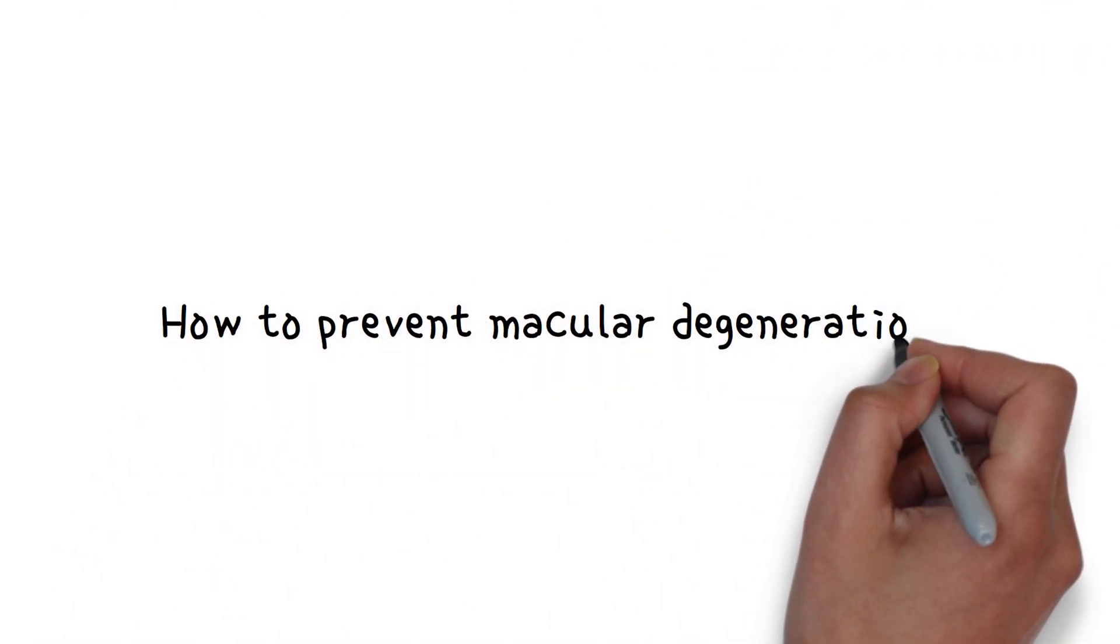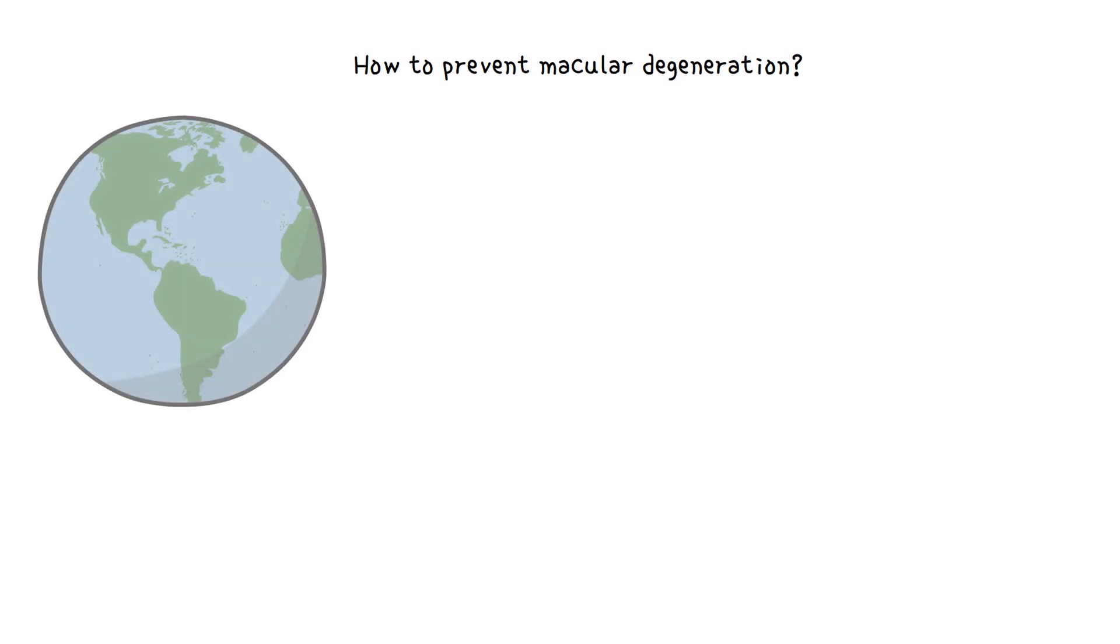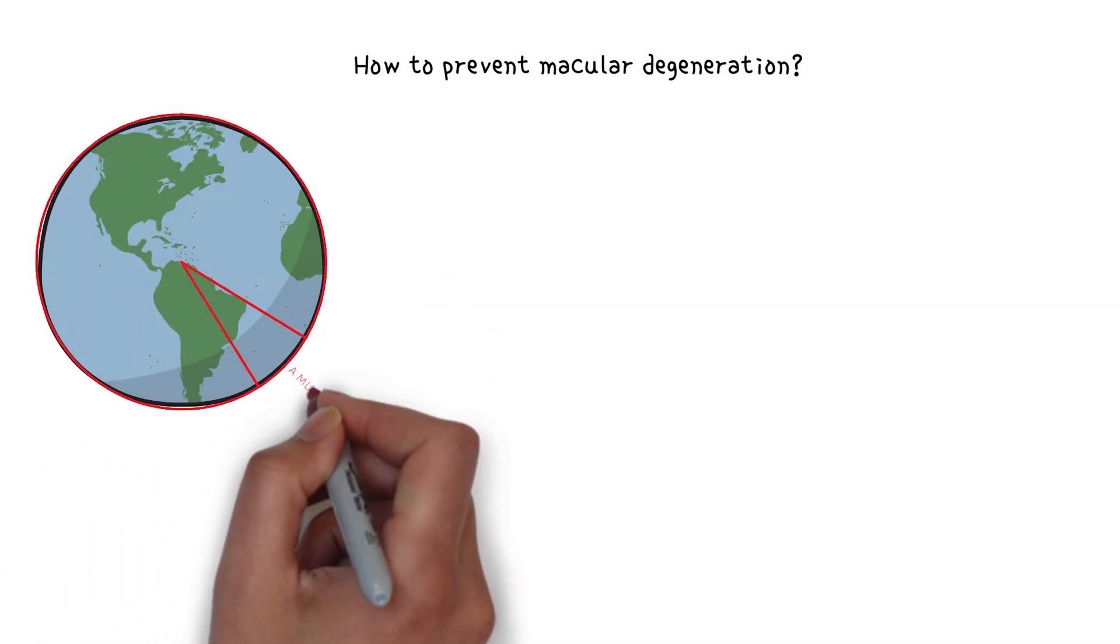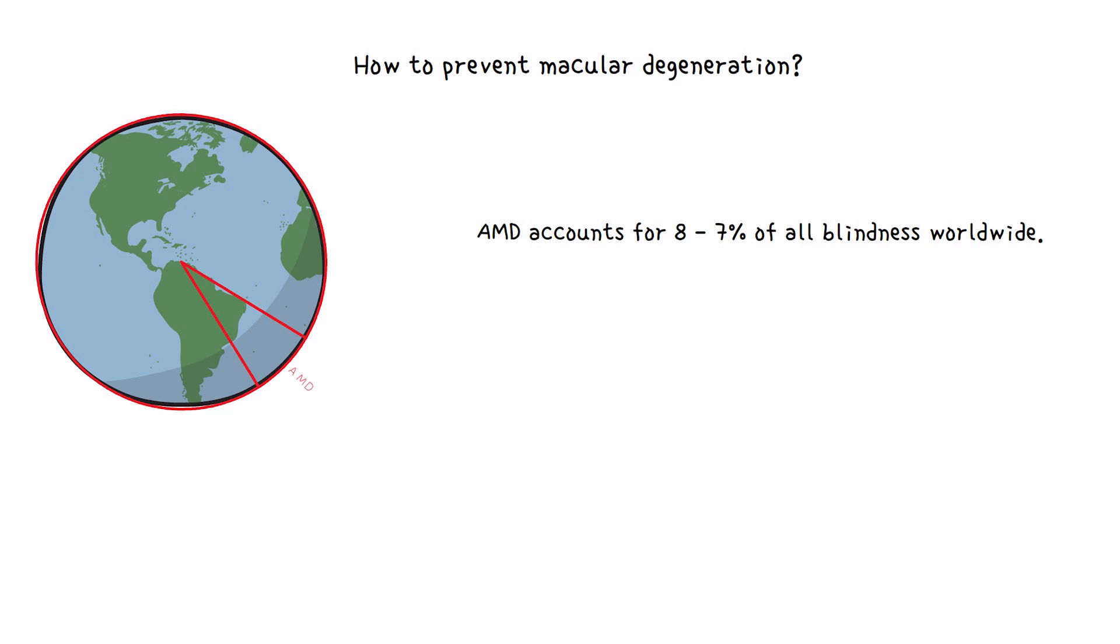How to prevent macular degeneration? Age-related macular degeneration accounts for 8.7% of all blindness worldwide and is the most common cause of blindness in developed countries.